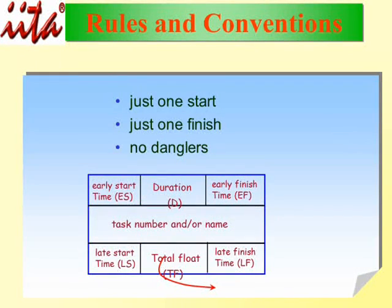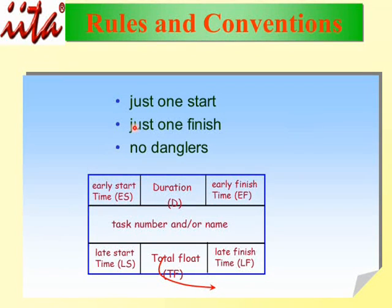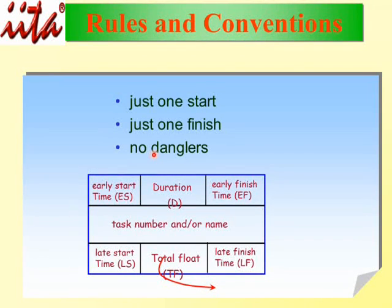We have a convention with rules to follow. There are only three rules: just one start is allowed, just one finish is allowed, and there are no danglers — no bridge leading to nowhere.